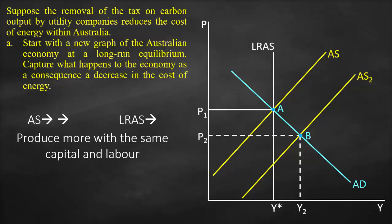We will shift our long-run aggregate supply to the right with a smaller shift, and this will be our new long-run output — our new potential output at full employment. We can see that Y2 is bigger than this new potential output in the long run, which means unemployment is lower than the natural rate of unemployment.